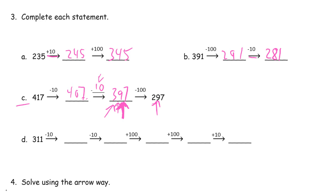On this one, we're just subtracting 10, subtracting 10, subtracting 100, adding 100, adding 100. So watch these operation signs. Make sure you know whether you're adding or subtracting. Be careful. 311 minus 10 is 301. Minus 10 again is 291. Add 100, 391. Add 100, 491. Add 10, 501.